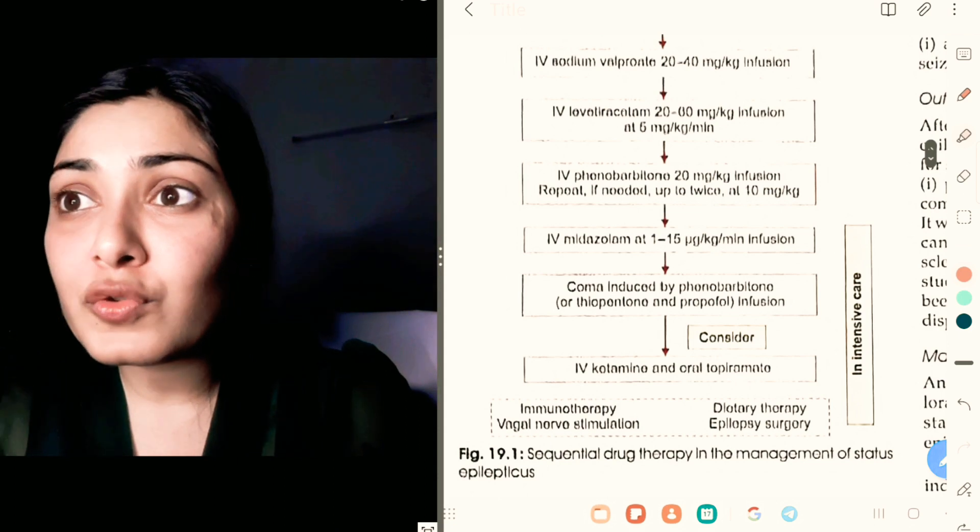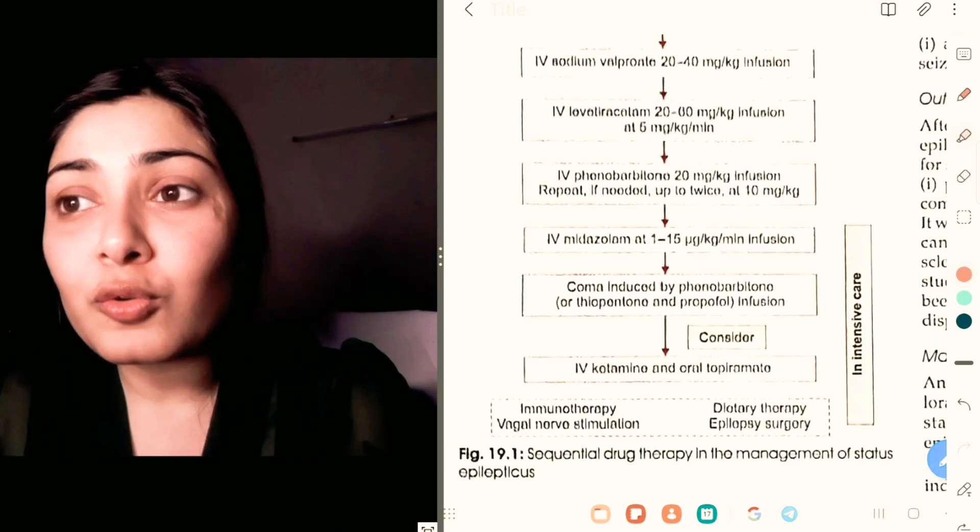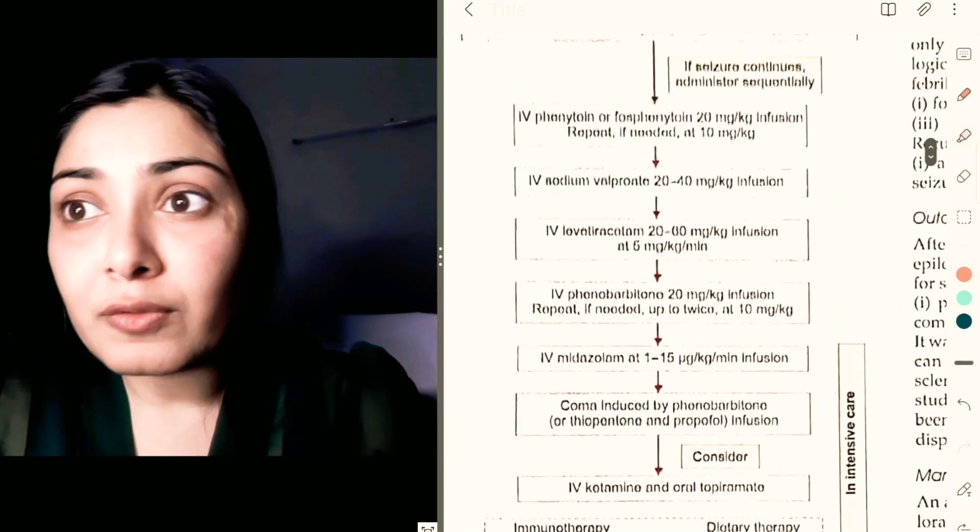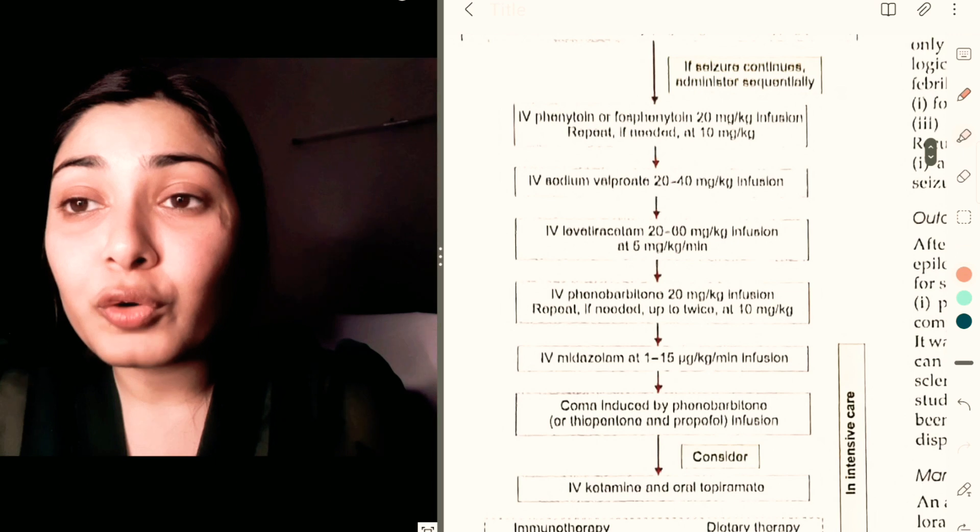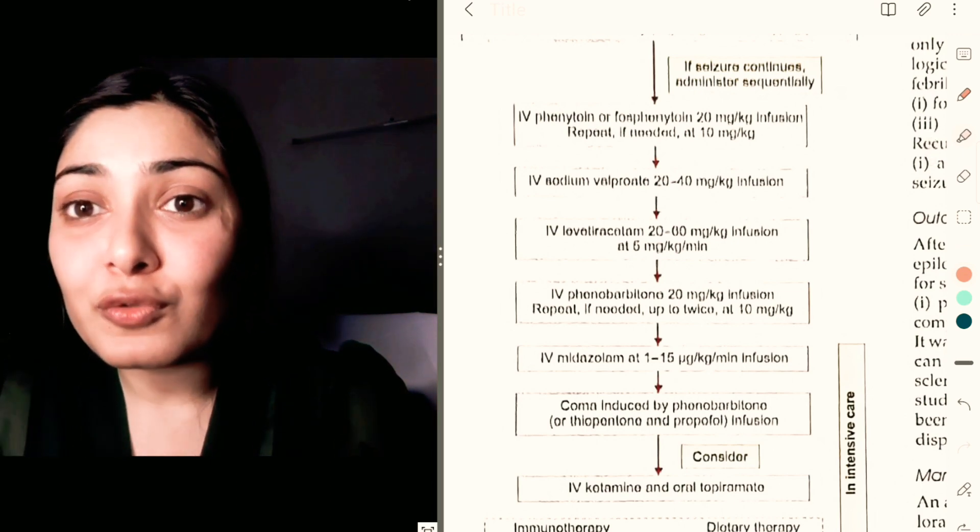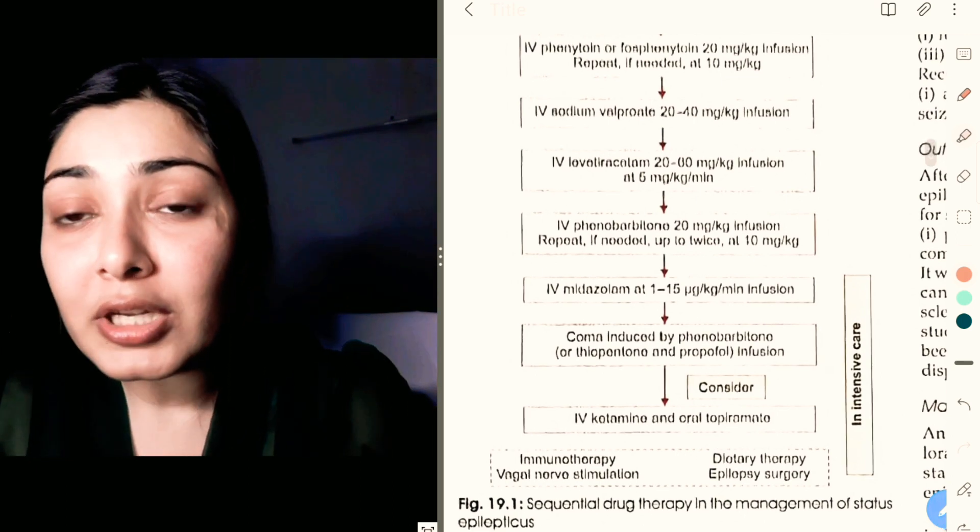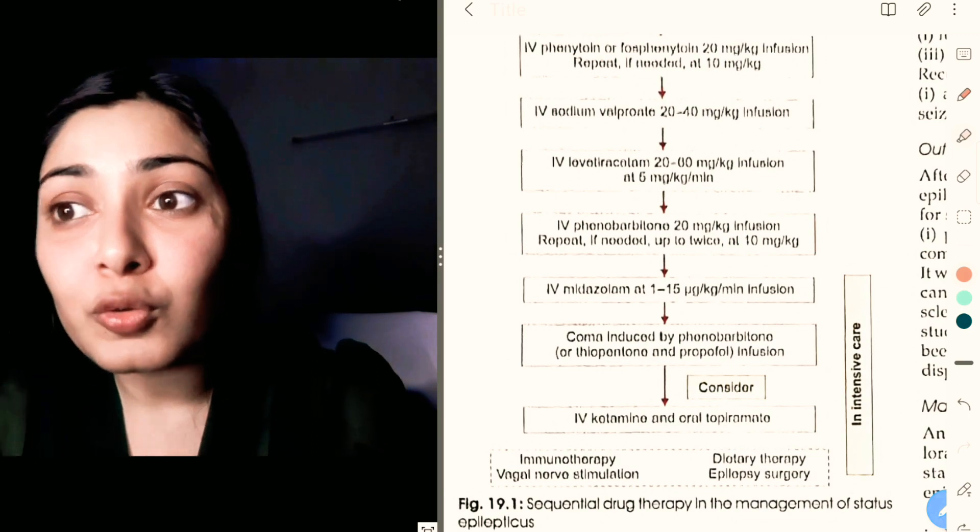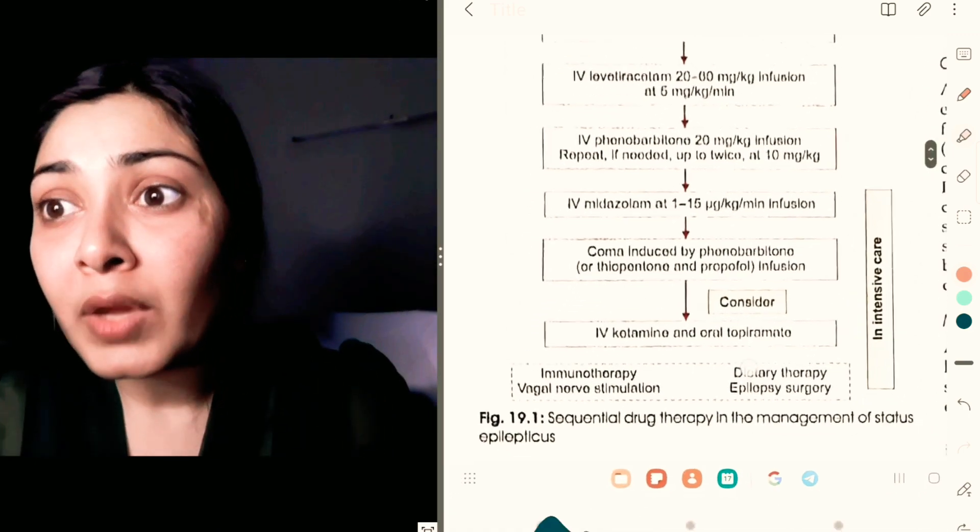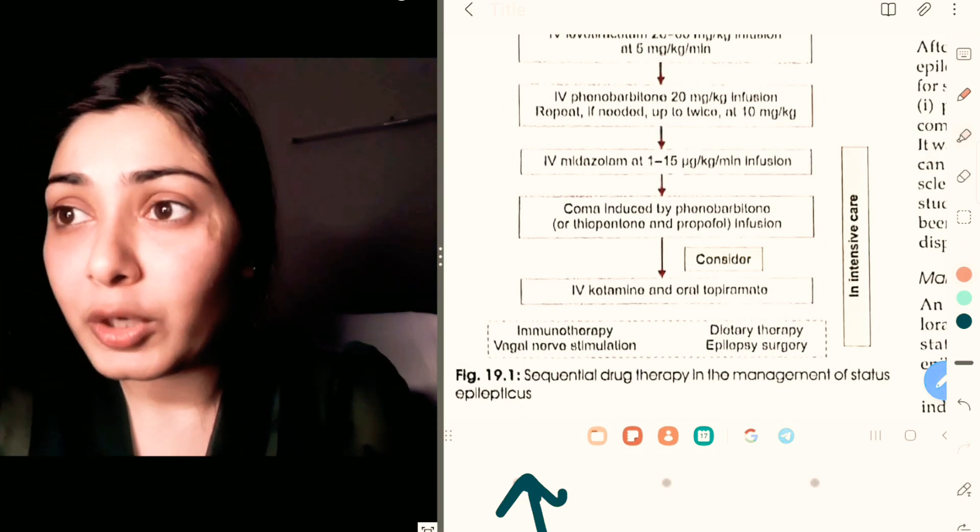It should be given in infusion. After all these drugs—valproate, phenytoin, levetiracetam, and phenobarbital—you start an IV infusion of midazolam at 1 to 15 mcg/kg/minute. If still the seizure is persisting, you induce a coma by phenobarbital or thiopentone or propofol. Lastly, you can consider IV ketamine or oral topiramate.